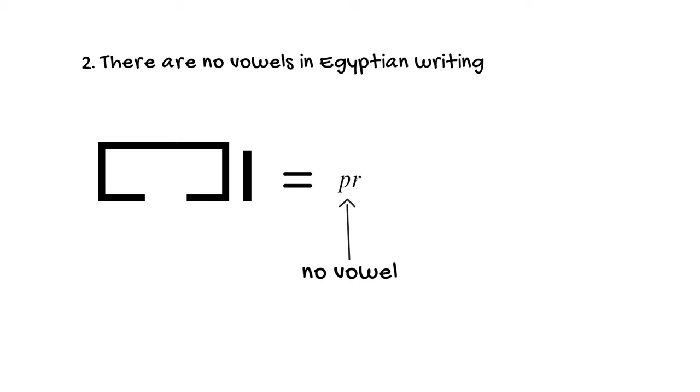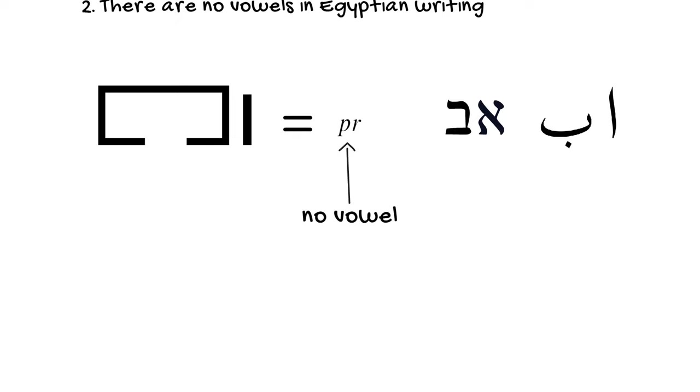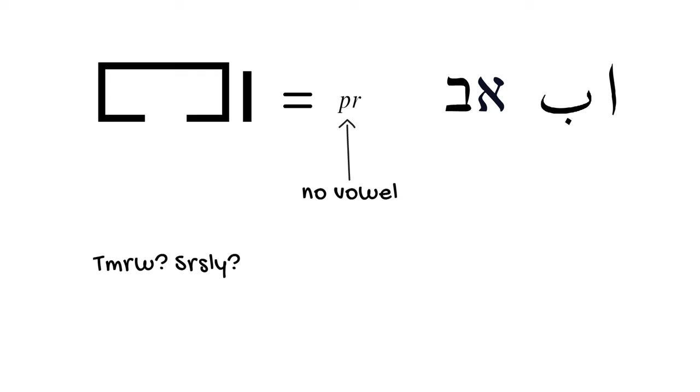This may seem strange at first for people who don't use this type of writing system, but it's actually a practice that shows up in other writing systems such as those of Arabic and Hebrew. And even in English, if you're a native speaker, you probably don't have much trouble reading things where the vowels have been taken out, especially if you've been texting for many years now.